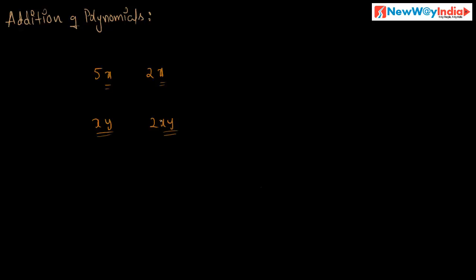Now, how do we add these like terms? Consider another set of like terms: 3ab, 2ab, and 5ab. These are like terms because they are having the same literal factor ab, ab, ab — the same literal factor for all terms. So these are like terms.